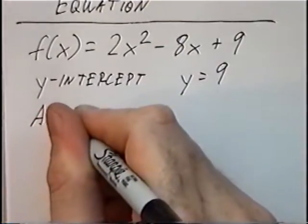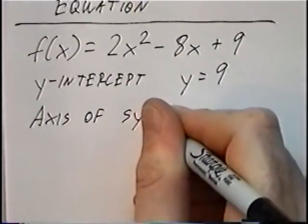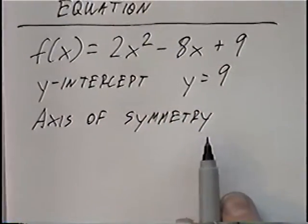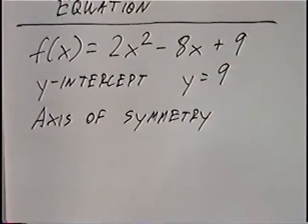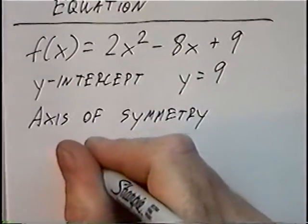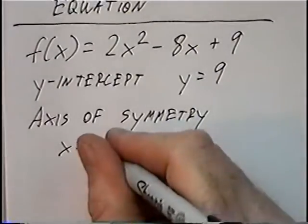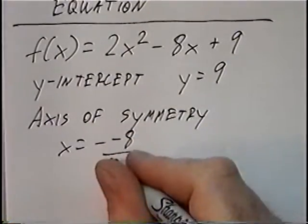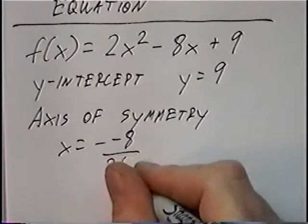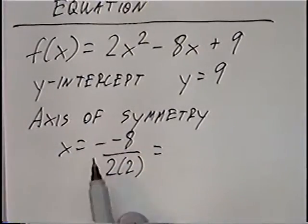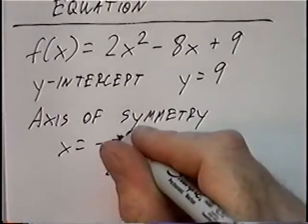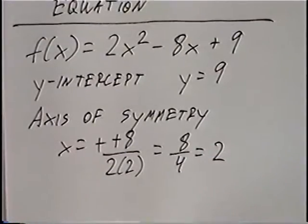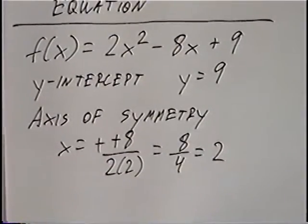We'll also find the axis of symmetry — the line down the middle of the graph that makes it symmetrical. This will be x = -b / 2a. b in this case is -8, so we have -(-8) / (2 × 2). Negative negative 8 is positive 8, and 2 times 2 is 4. 8 divided by 4 is 2. So the axis of symmetry is x = 2.